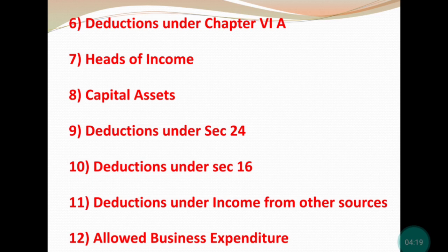Next is deduction under Section 24 — this is for house property। SOP और LOP के लिए जो Section 24 के deductions हैं, उनके बारे में यहाँ लिखना है। Next is deductions under Section 16 — purely salary chapter से related। इसमें तीन चीज़ें cover होती हैं: standard deduction (₹40,000), entertainment allowance (सिर्फ government employees के लिए), और profession tax।